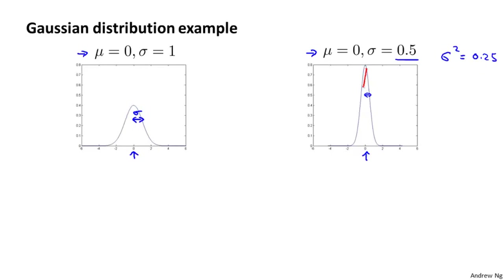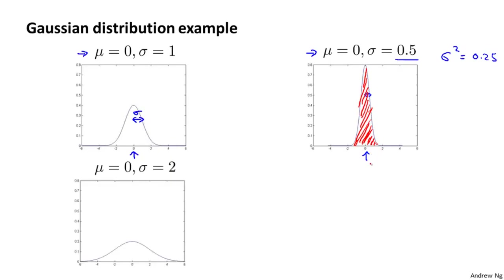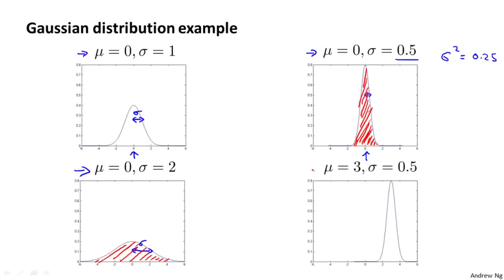Because this is a probability distribution, the area under the curve must integrate to one. So with sigma equals 0.5, the density is twice as tall to compensate for being half as wide. Another example: if sigma equals two, you get a much wider, fatter Gaussian density — the area still integrates to one, so it's shorter in height. Finally, if we also change mu — say to three — the entire Gaussian distribution shifts so it's now centered at three.